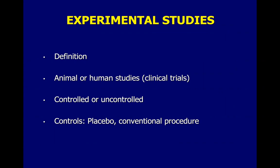Let's move on to the next category: experimental studies. By definition, experimental studies are those where we are introducing an intervention — could be a treatment, a procedure, or a protocol — and then seeing whether we made an impact. This could be animal studies or human studies. Human studies that are experimental are called clinical trials. They can be controlled or uncontrolled, and the control can be a placebo or conventional procedure.